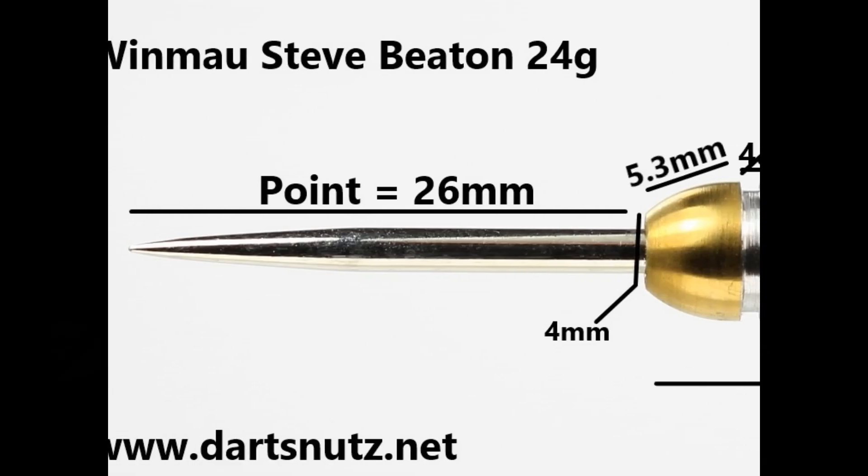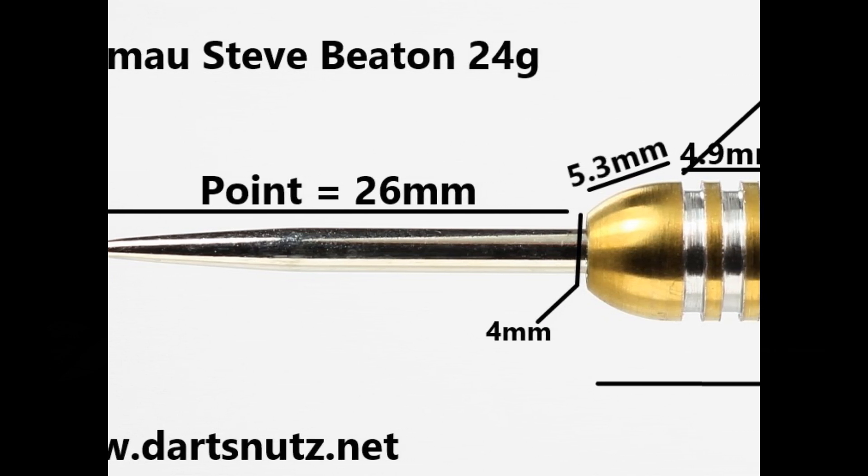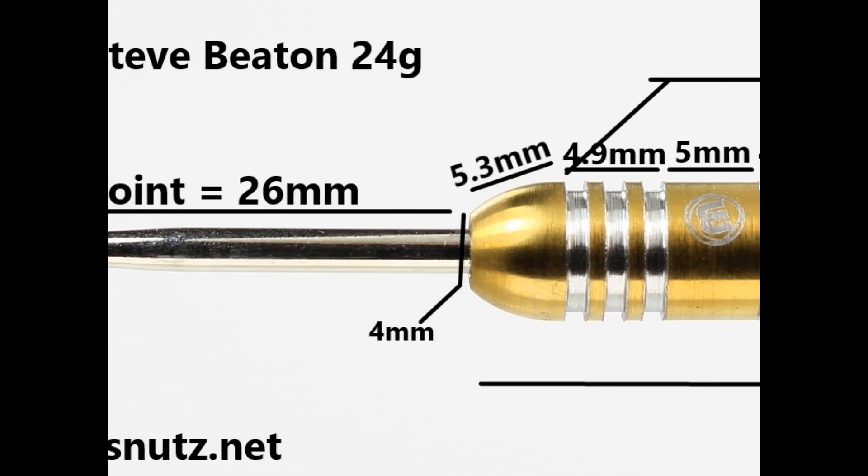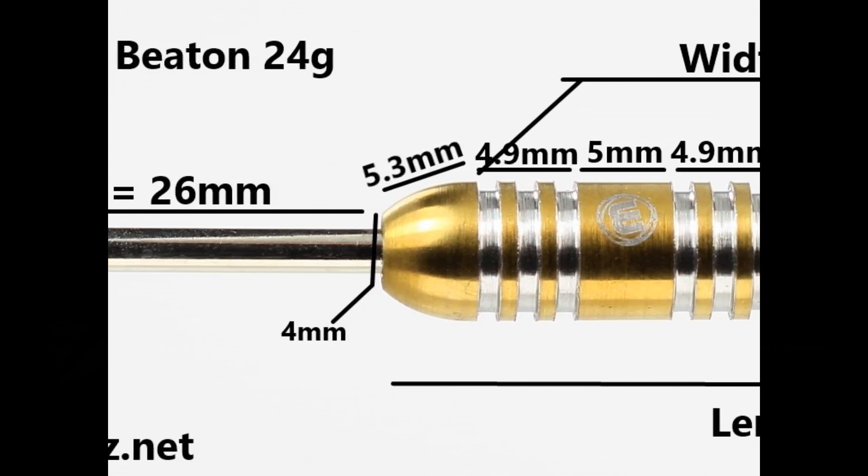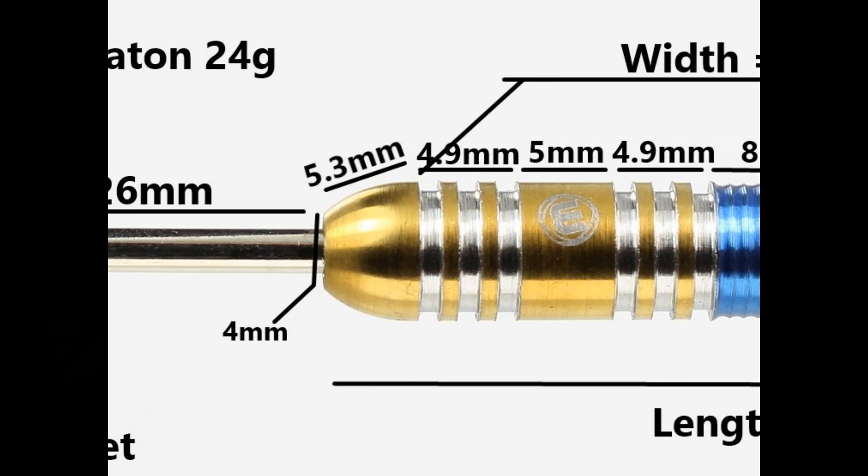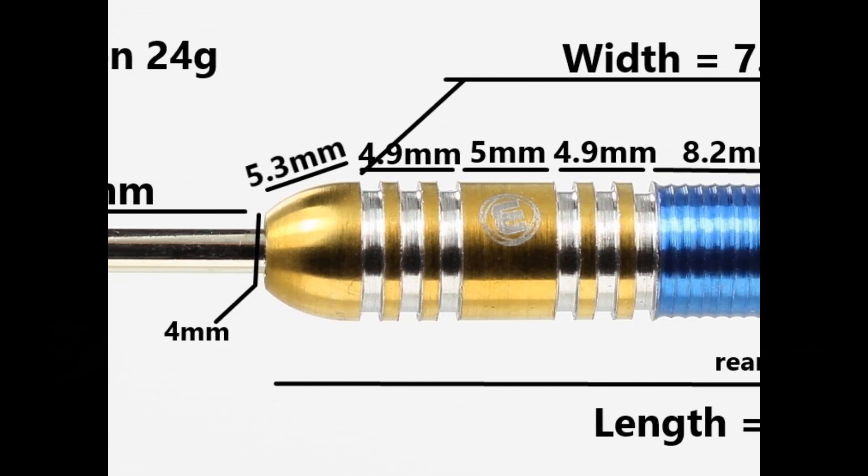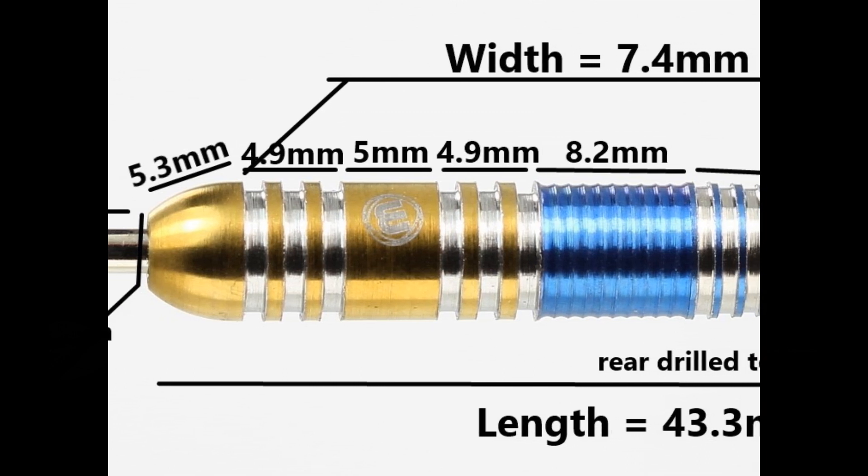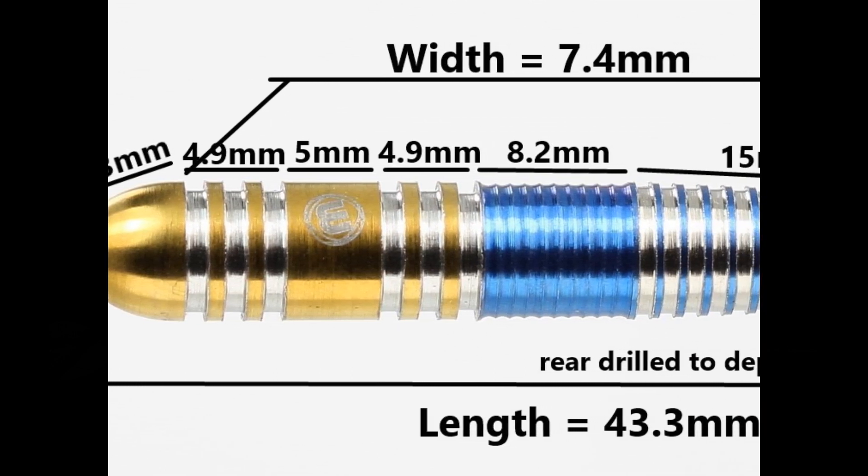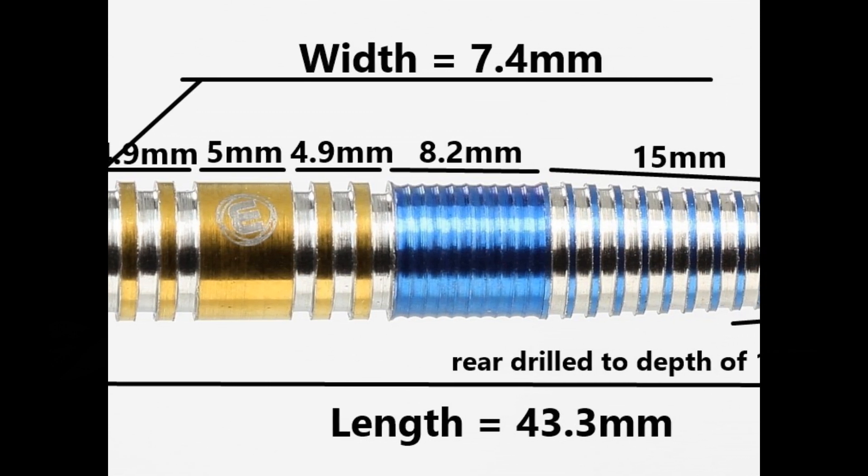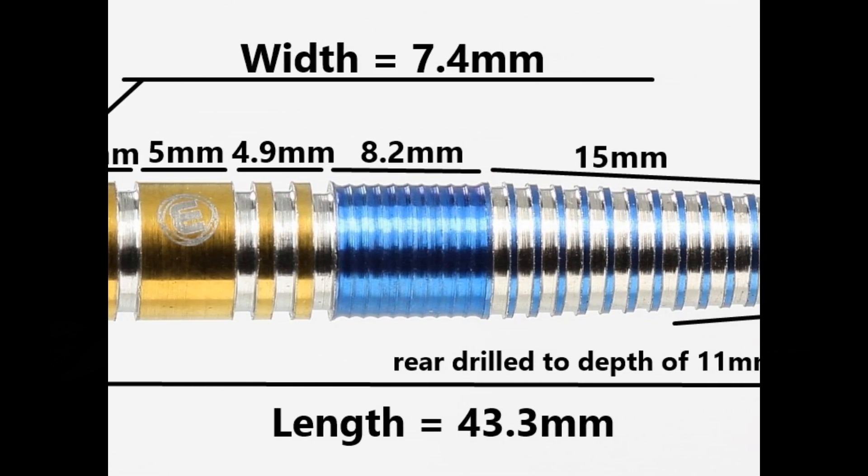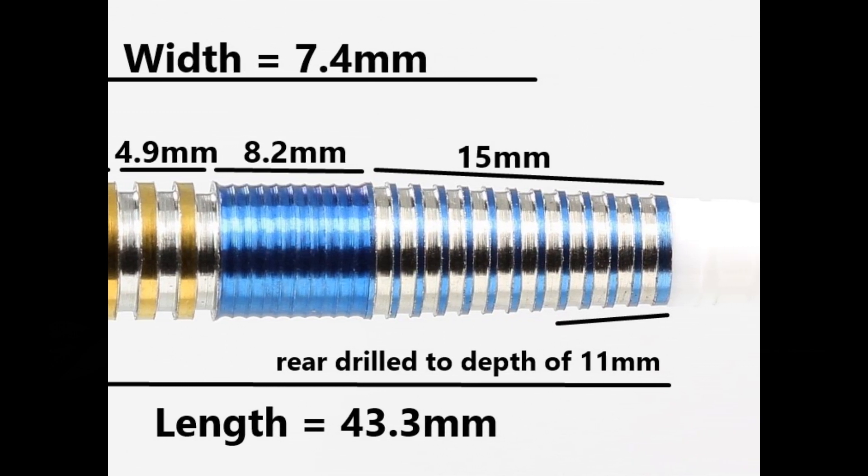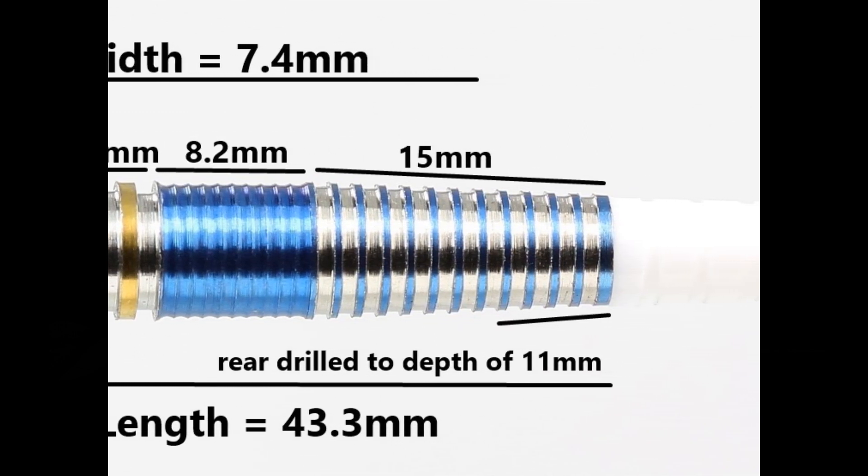The darts are fitted with a 26mm silver point. There's a slight ball nose to the barrel. And the front section is 5.3mm. And then you've got some rings and grooves of 4.9mm. Then a smooth section of 5mm. And then some more rings and grooves of 4.9mm. Then around the middle you've got this micro style grip with the blue nitride coating. That's 8.2mm. And then the rest of the barrel is made of the thin ring grip which is 15mm. The length is 43.3mm. And the width is 7.4mm.